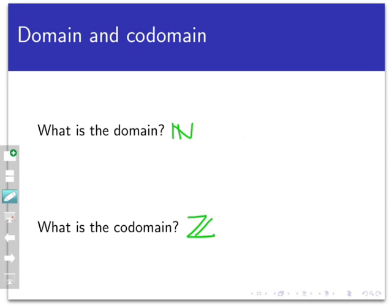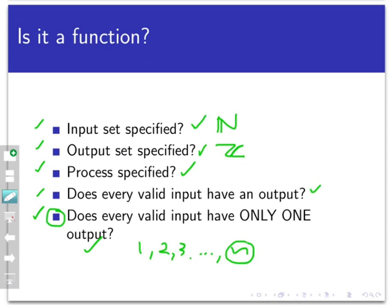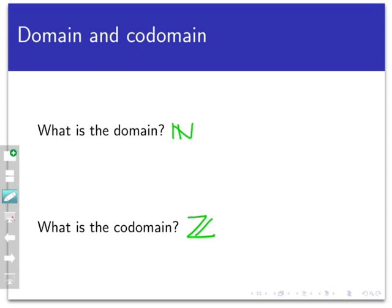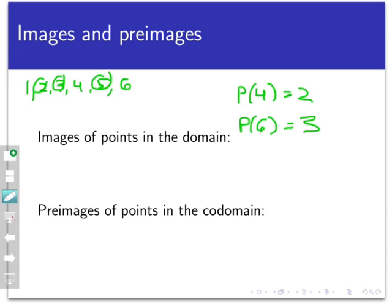You might be thinking — really, the set of all integers? Are we ever going to get, for example, negative one out of this function? The answer is no, but that doesn't change the fact that the codomain is specified to be the set of integers. The set of actual outputs could be far smaller than that, but the question is what's specified as the receiving end of the process. Now it's a good idea to play around with the function. We already found the image of 4 is 2. What about 6? Looking at numbers less than or equal to 6, I see 3 primes: 2, 3, and 5. So the output is 3.